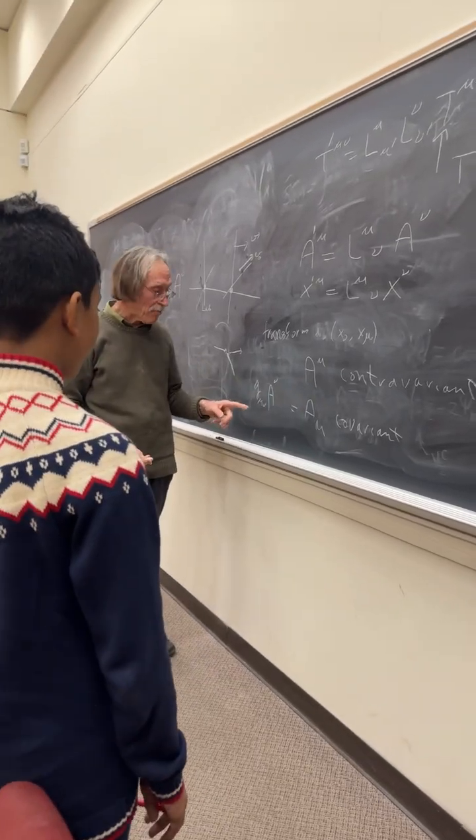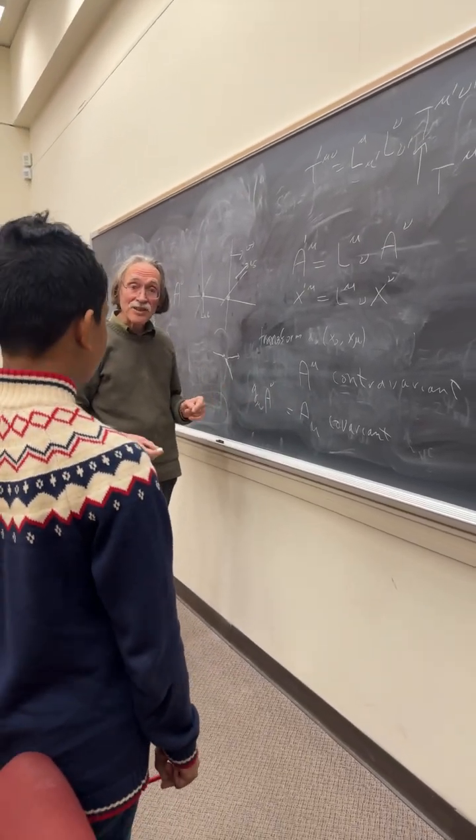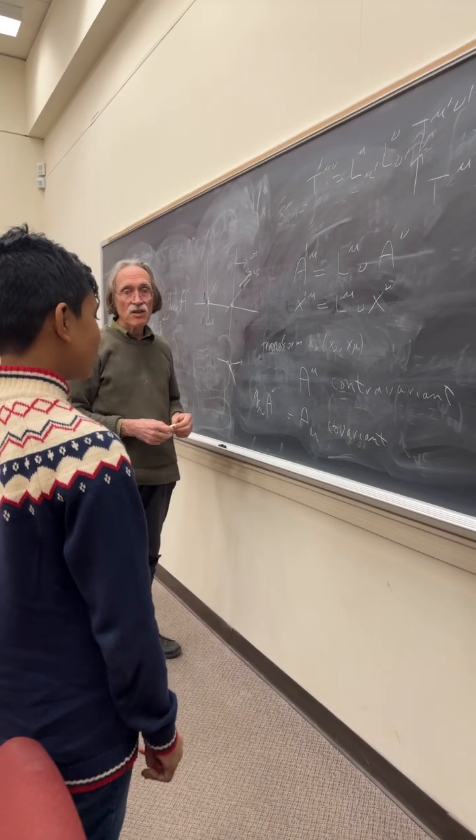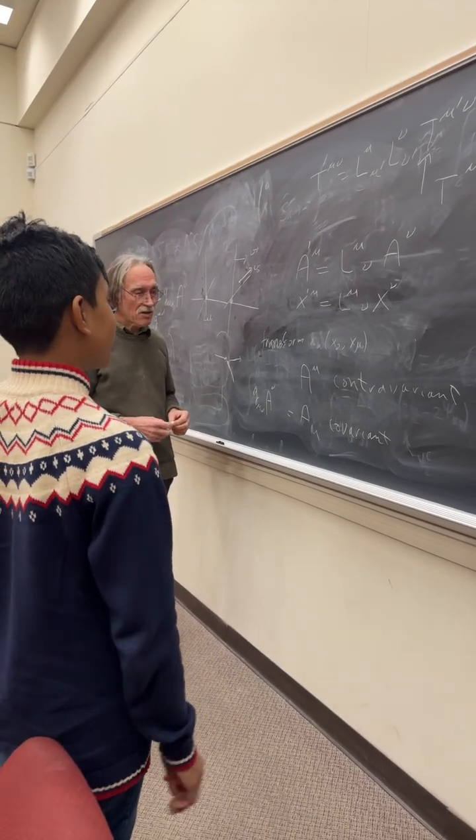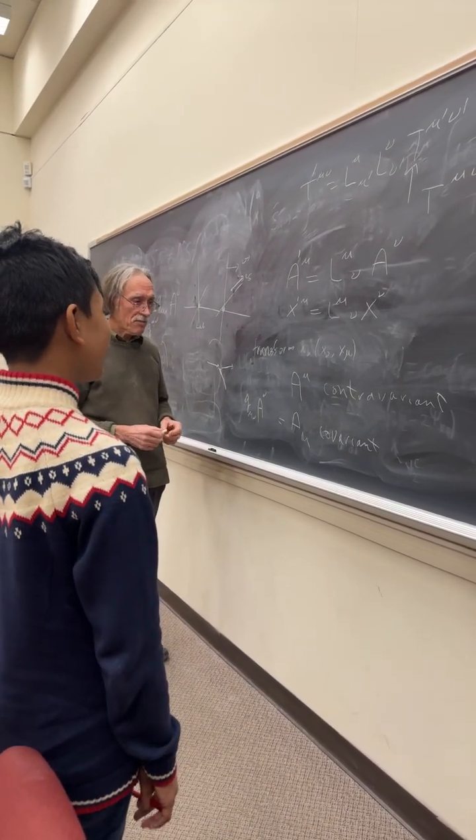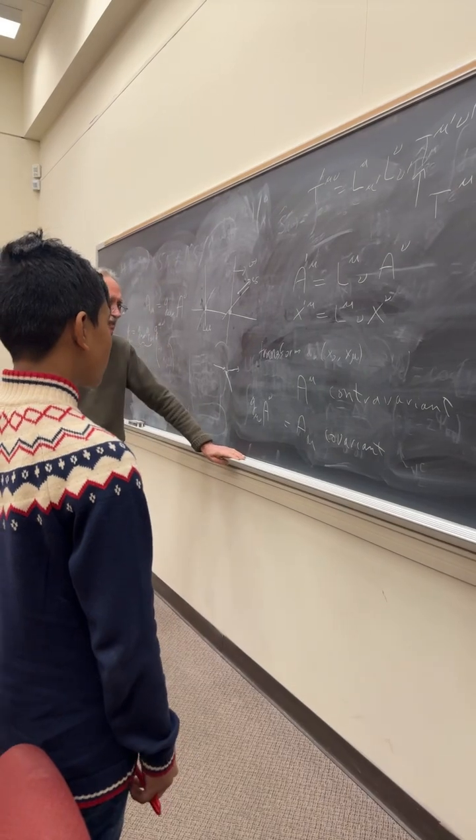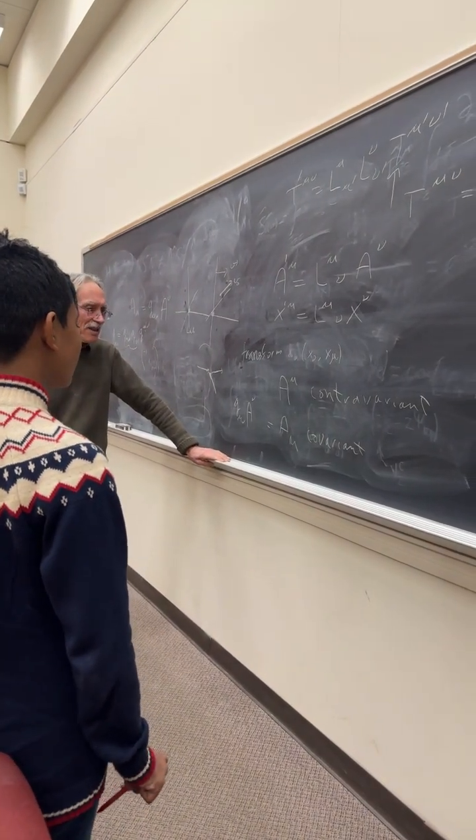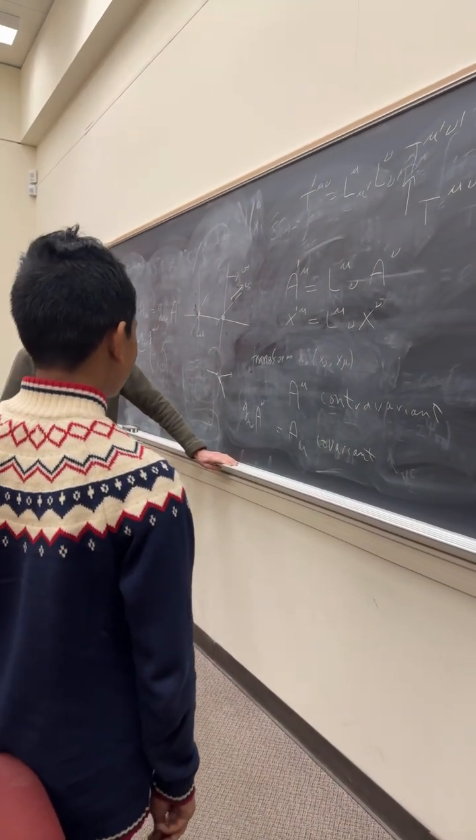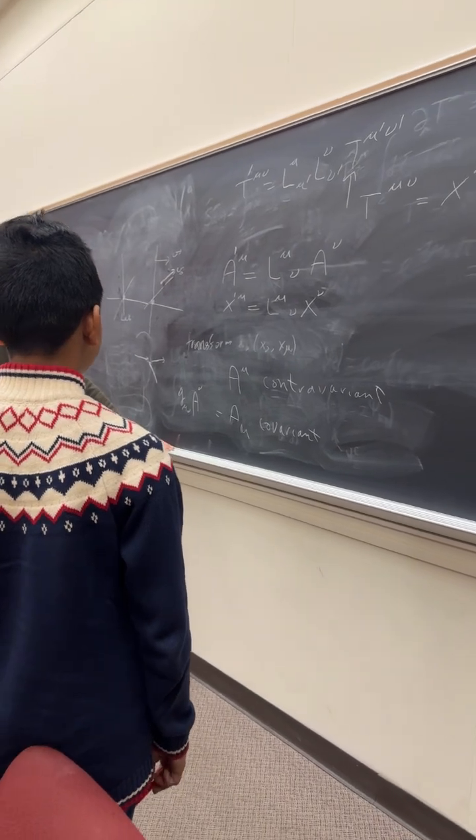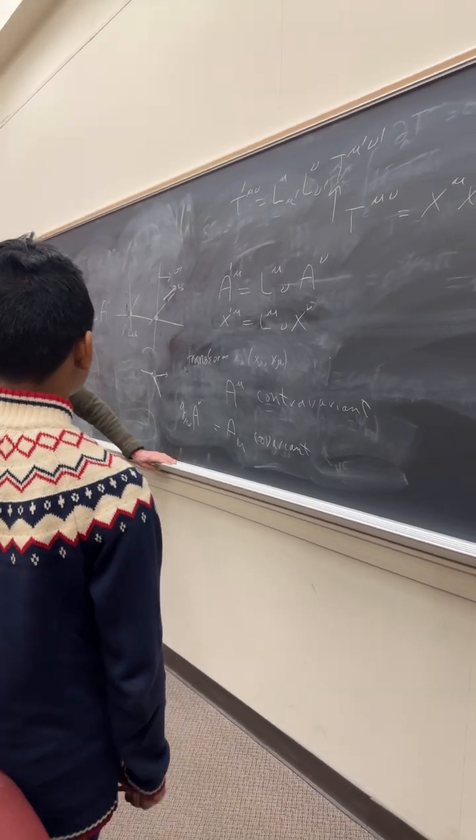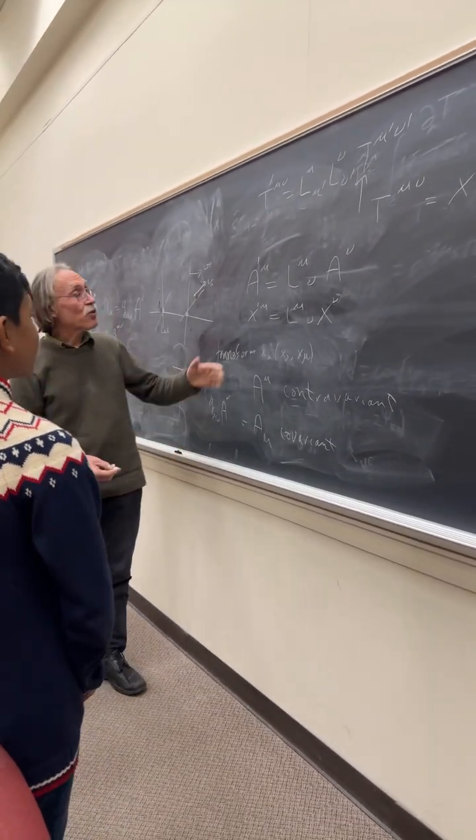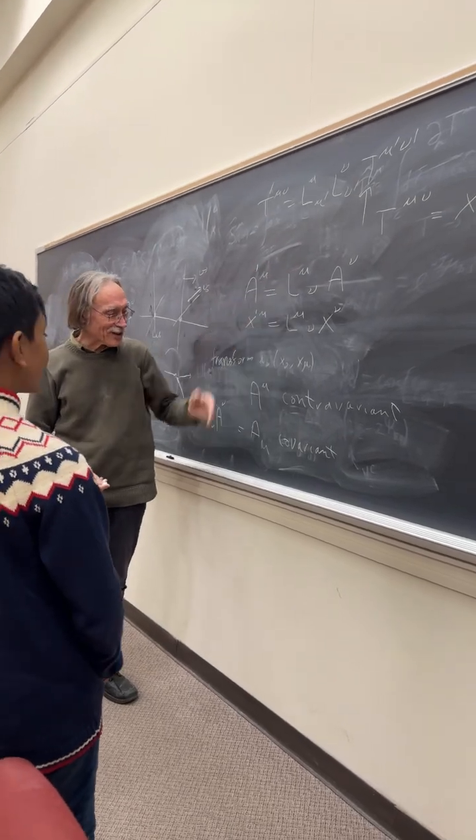The spatial components are the same, but the time component has a minus sign. So basically, this one is covariant because it transforms in the same way as the space-time coordinate. I don't really know why they give the names like that. I don't know the history. Because this one also transforms nicely with Lorentz transformations.